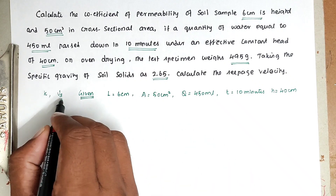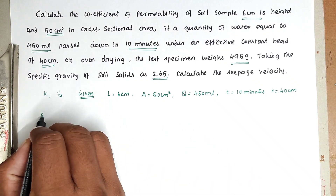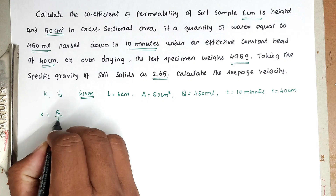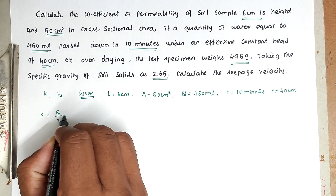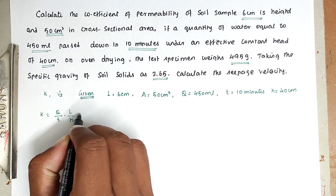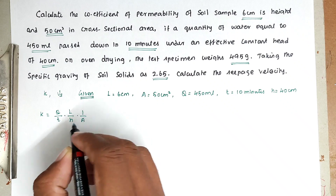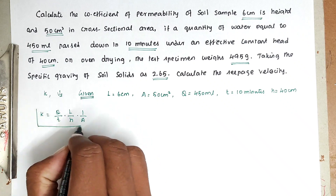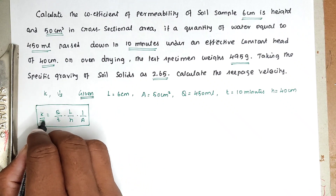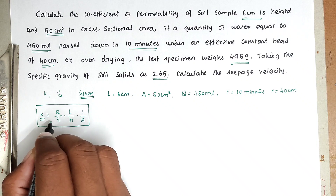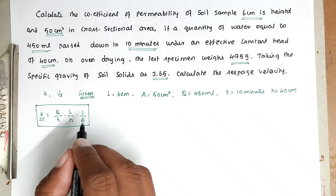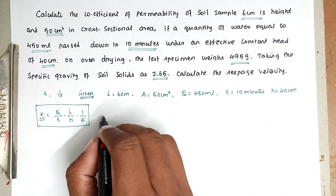Now we need to find K and Vs. The formula for K in the constant head permeability test is: K = Q × L divided by T × H × A.